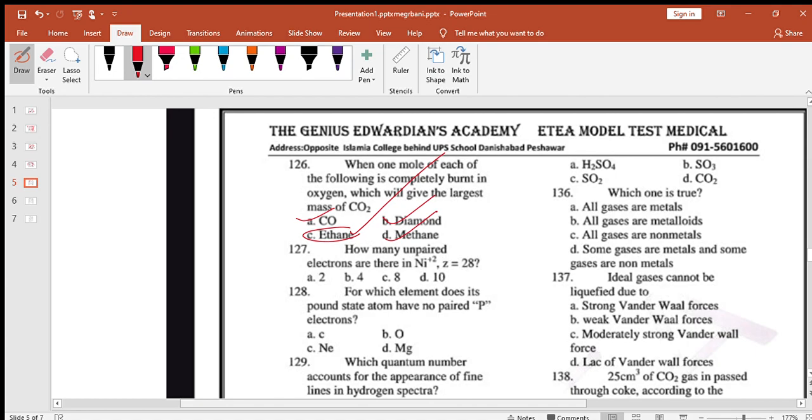How many unpaired electrons are there in nickel plus 2? Nickel is 4s2 3d8, but now it's 2 to 4s and 3d8. We don't have unpaired. Option 4.